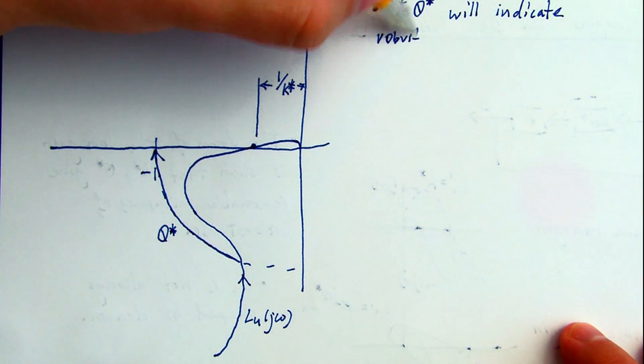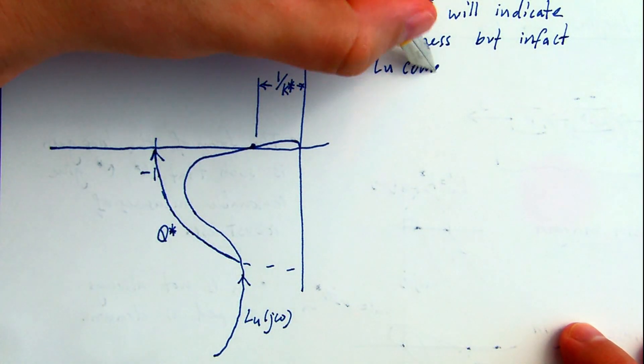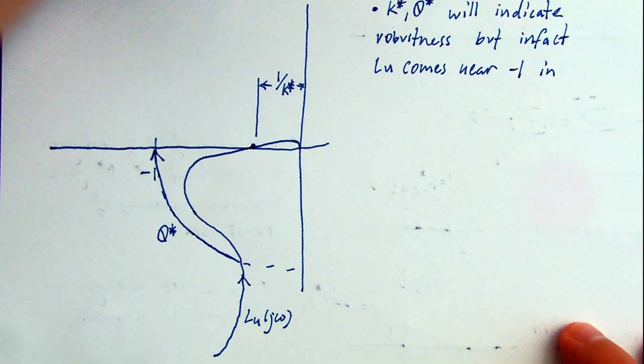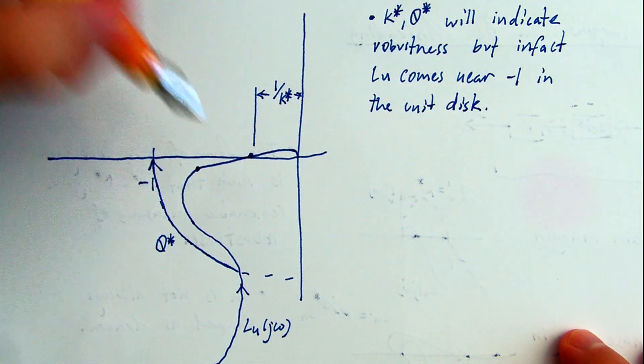And the phase margin is, by inspection, at least 60 degrees. But inside of the unit disk about the origin, the loop gain comes very close to the critical point.